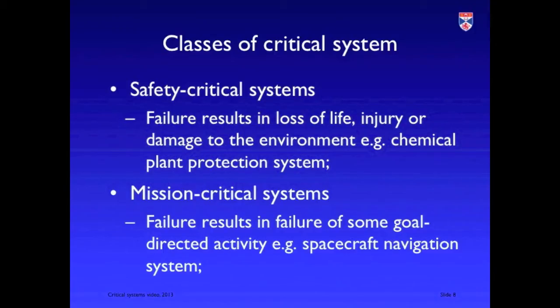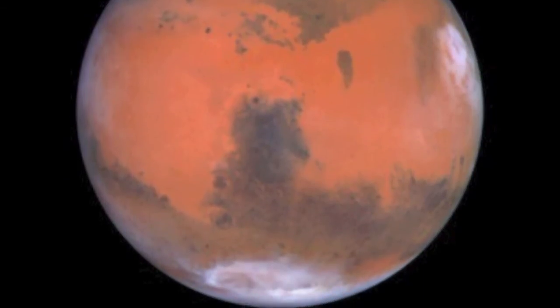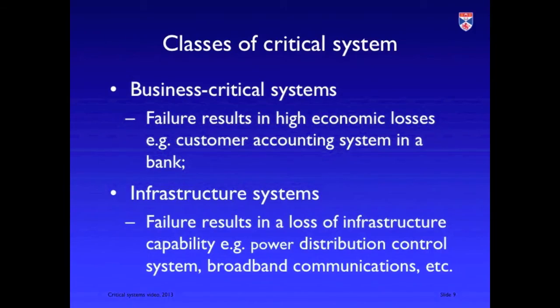Mission critical systems are the kind you could see in a spacecraft, where failure affects a broader mission. There was an example of a spacecraft going to Mars which failed and missed Mars — a failure with very high economic losses as a consequence. Business critical systems are systems where failure has very significant economic consequences for a business. Think about Amazon: a loss of service means it loses its ability to sell goods, potentially losing millions of dollars every hour. Similarly, banks' accounting systems and ATM systems all lead to serious economic consequences.